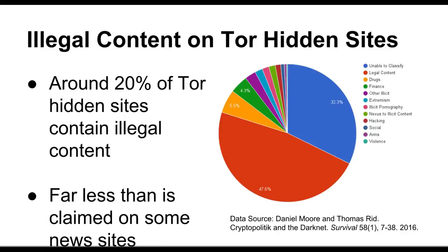Of the remainder — about 20% of hidden sites — content did contain illegal material. Over a quarter of that was drugs: people buying and selling drugs online. Finance and identity theft was the next biggest slice, followed by other illicit content, extremism and violence, illicit pornography classified as nexus to illicit content, hacking, criminal organization social sites, arms trafficking, and violence-related sites.